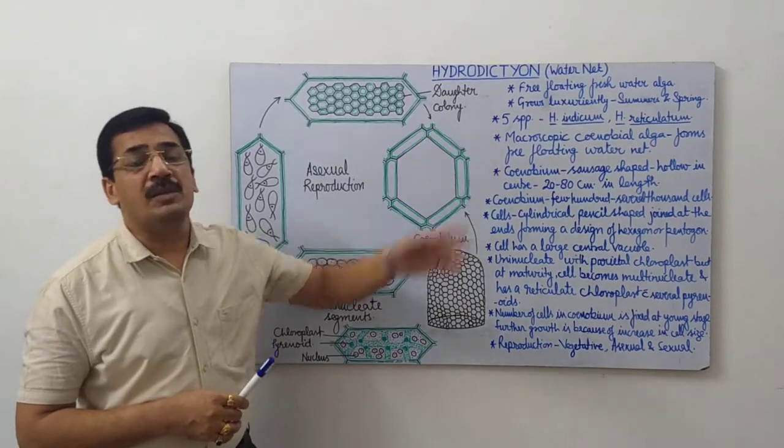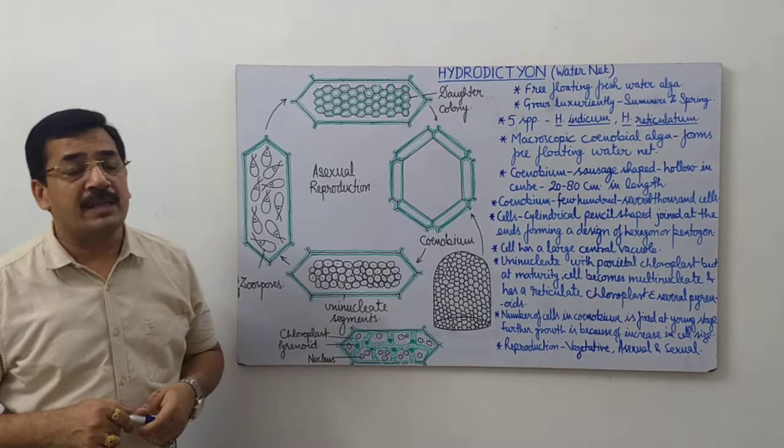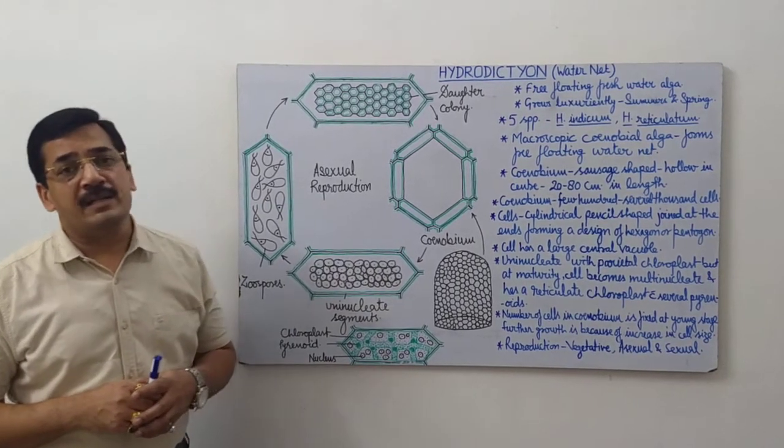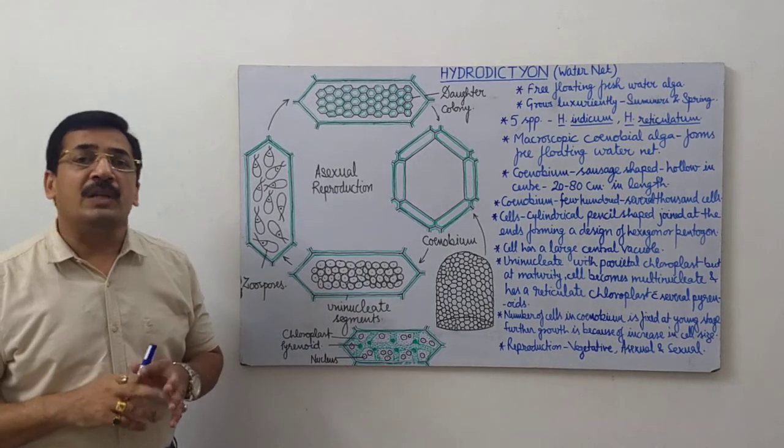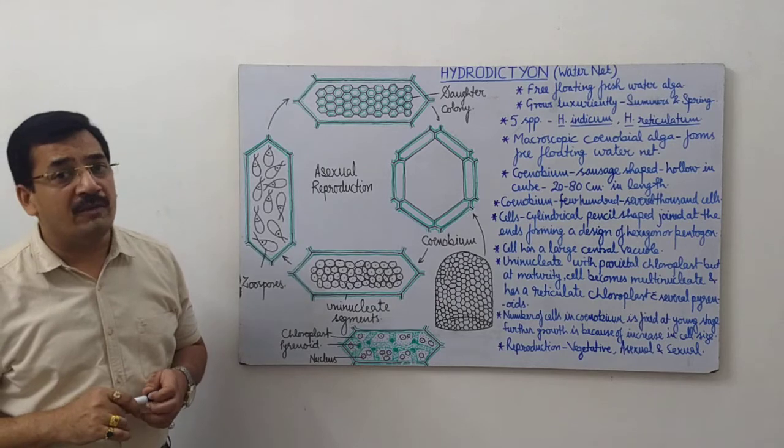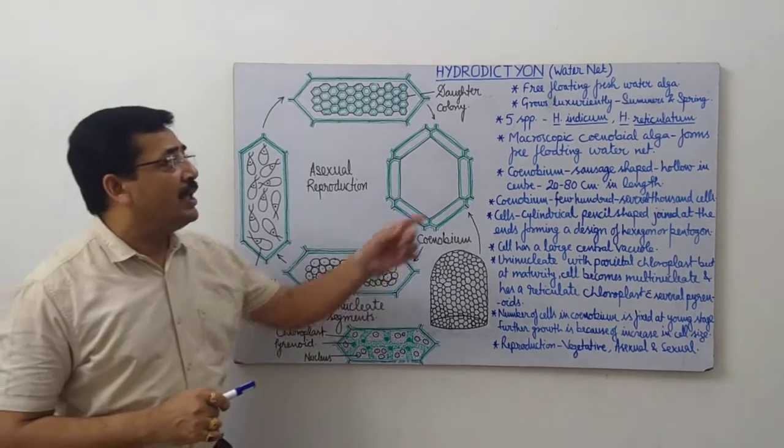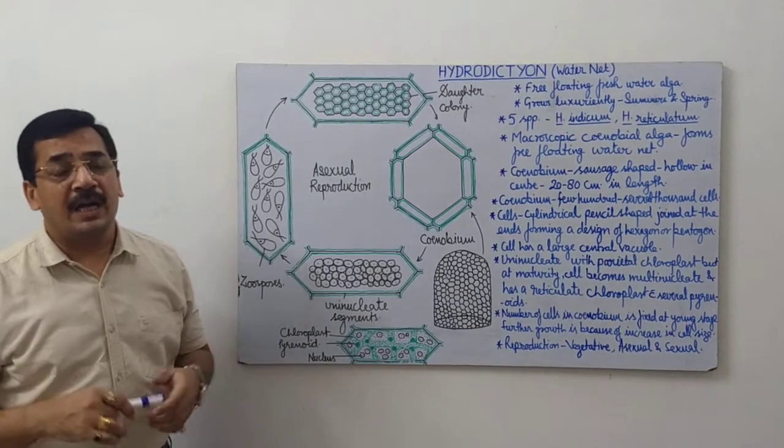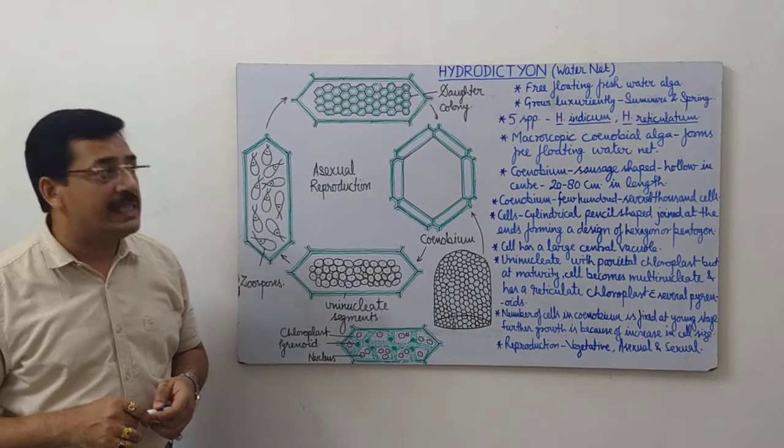It grows luxuriantly during summers and spring season. As far as its species are concerned, till now only five species have been reported all over the world, among which Hydrodictyon indicum and Hydrodictyon reticulatum are the common Indian species.